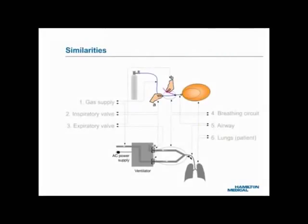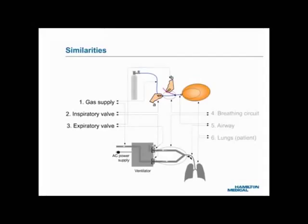The balloon model is highly comparable to a real ventilator system. One: the cylinder corresponds to the high-pressure gas supply — a ventilator system needs the supply of two gases: high-pressure oxygen and high-pressure air. Two: hand A corresponds to the inspiratory valve. Three: hand B corresponds to the expiratory valve. Four: the blue and pink tubes between the Y piece and the two hands correspond to a breathing circuit. Five: the blue tube piece between the Y piece and the balloon corresponds to the airway. Six: the balloon corresponds to the lungs of a ventilated patient.